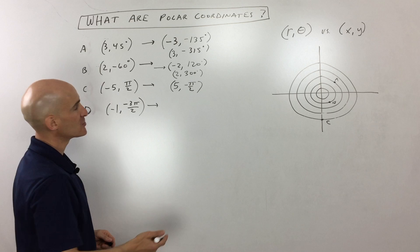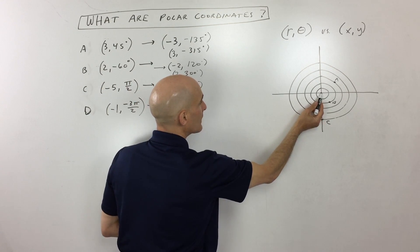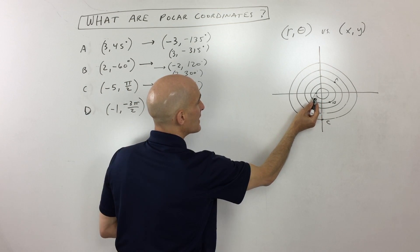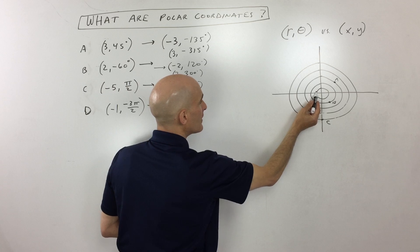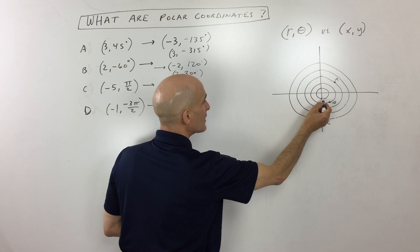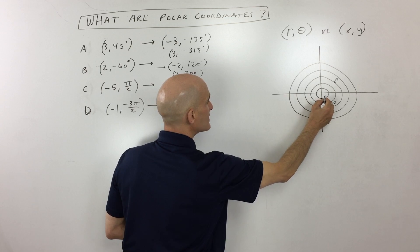But let's look at the last example. (-1, -3π/2). So negative 1 means we're going left 1. And then negative 3π/2 means we're going clockwise. And we end up right here. And that's going to be point D.